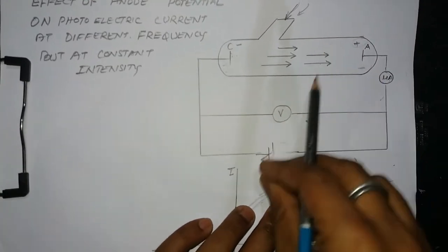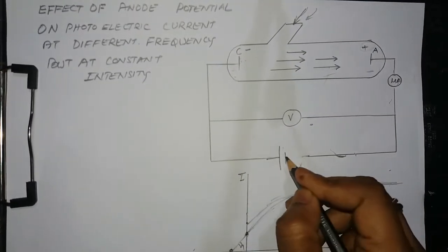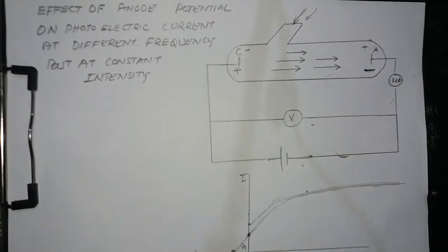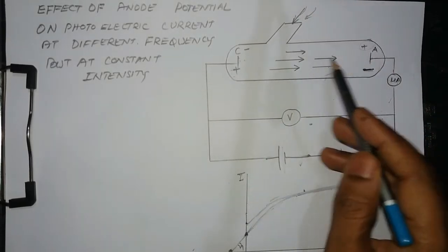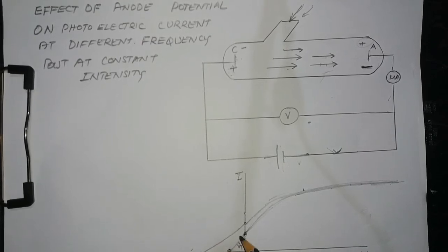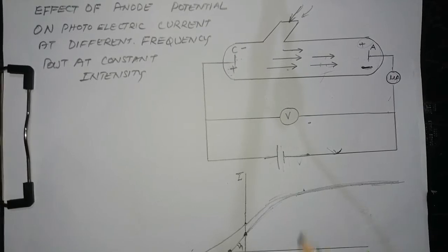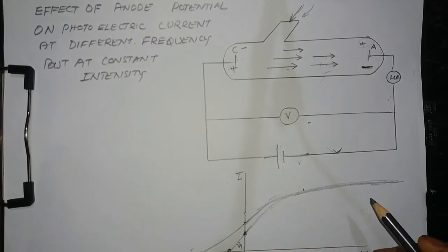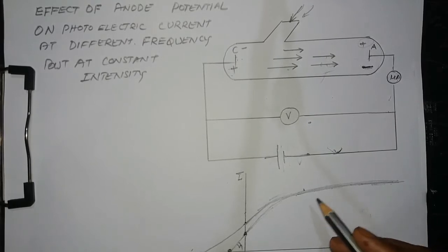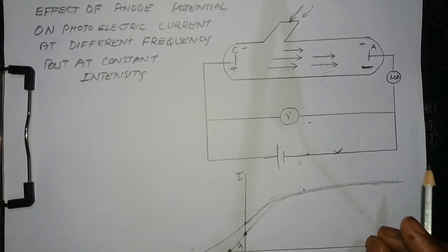Now I have reversed the polarity again. The retarding force acts on these electrons and the photoelectric current starts decreasing. But this time it becomes zero at some other, higher potential. This means that when we increase frequency, the saturation current remains constant but the stopping potential is increasing.